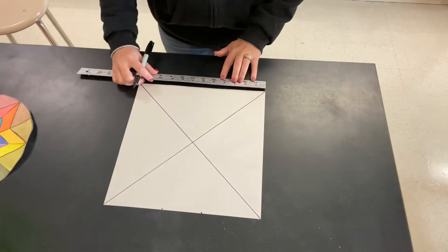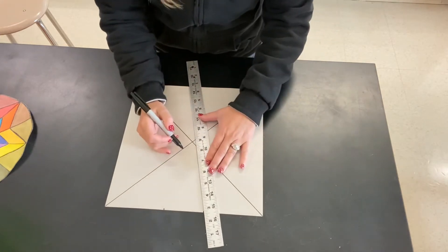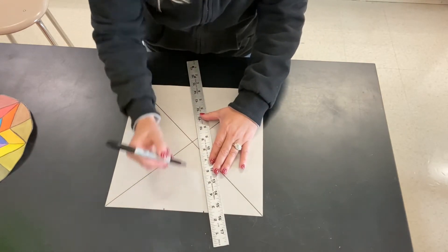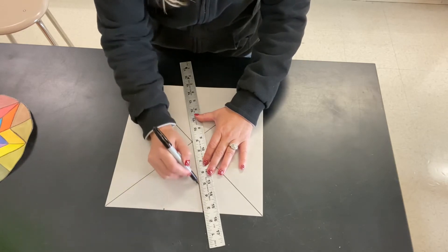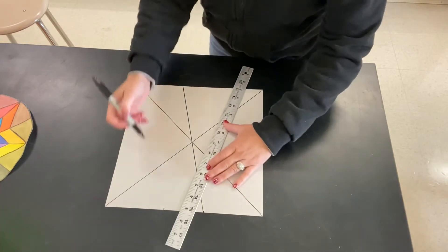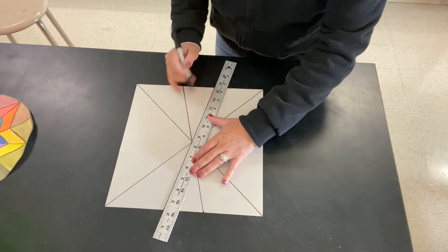And you're going to do the same thing—actually, you know, you don't need to do the same thing down below. So what you're going to do is line that mark that you just made up with the exact center of your piece of paper, and you're going to draw a line all the way through. Same thing from this one.